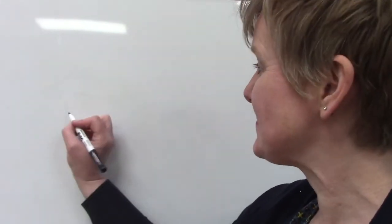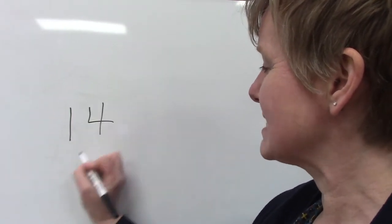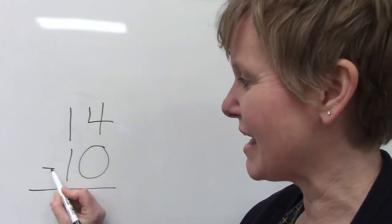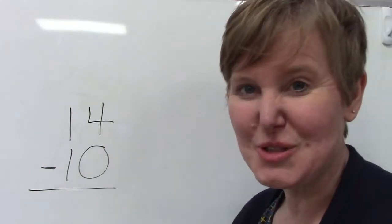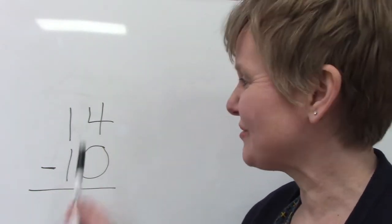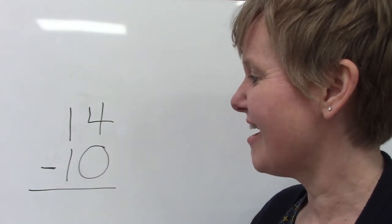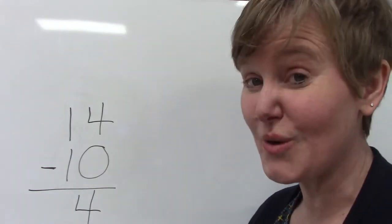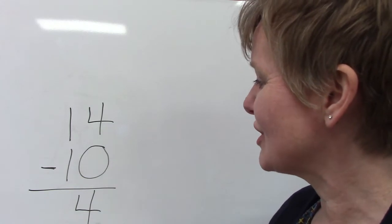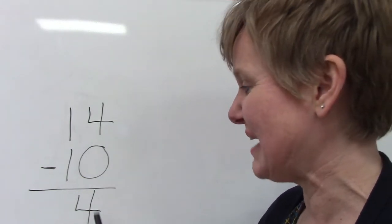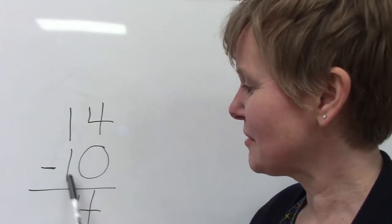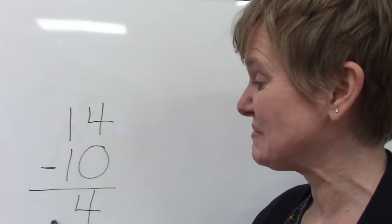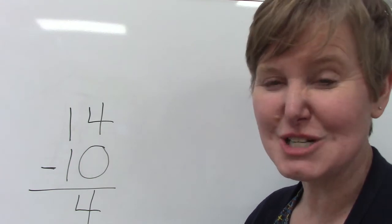Let's do an easy one. 14 take away 10. Remember that our minus sign, or the subtraction sign, it just says take away. So if we have 14 and we take away 10, our answer is going to be 4. Because if we look at the ones place, we have 4 and we don't take anything away, our answer will be 4. And when we go over to the tens place, we have 1 take away 1, and that's going to be 0. 14 take away 10 is 4.